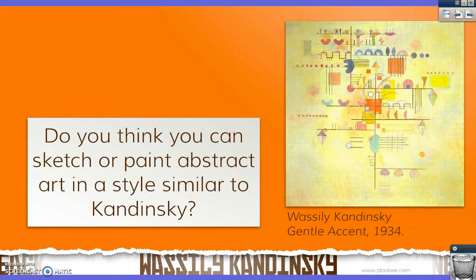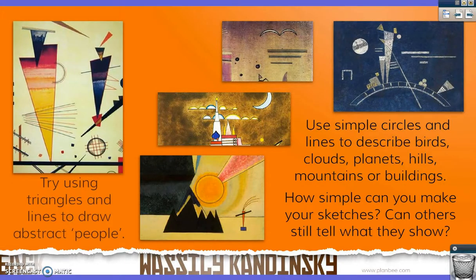What you're now going to try and do is paint or sketch an abstract artwork in a style similar to Kandinsky. Think about your forms, shapes and patterns. Maybe you're going to draw an image with people involved, using triangles and lines in abstract styles. Or maybe you'll do some landscapes, using simple circles and lines to describe birds, clouds, planets, hills, mountains or buildings. How simple can you make your sketches? We're not looking for lots of detail, but think about those shapes, forms and patterns to create an image that reflects exactly what you see in your head. What colours are you going to use? Are your colours going to represent your moods and attitude towards something? Think about this idea of abstract art and give it a go yourself. I look forward to seeing your artworks.